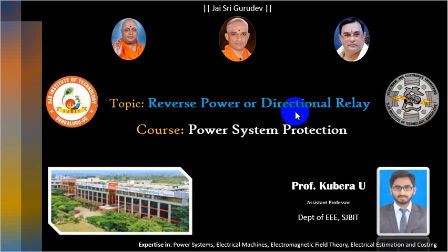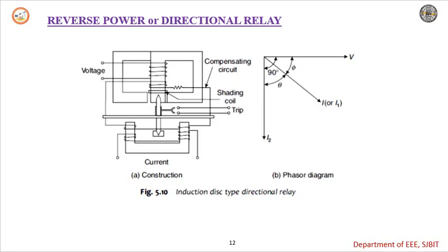Hello everyone, welcome to the power system protection course. In this lecture we will discuss about the reverse power or directional relay. The name itself indicates that the relay will operate whenever there is a flow of power in the opposite direction. If due to some reasons the power flows in the opposite direction, then the relay will operate and give the signal to the circuit breaker to trip the circuit.